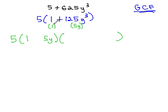And then in the trinomial, we start by squaring the first term, 1 squared is 1. Multiplying the terms together, 1 times 5y is 5y. And finally, squaring the last term, 5y squared is 25y squared.